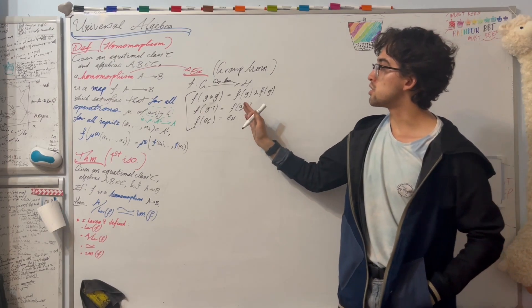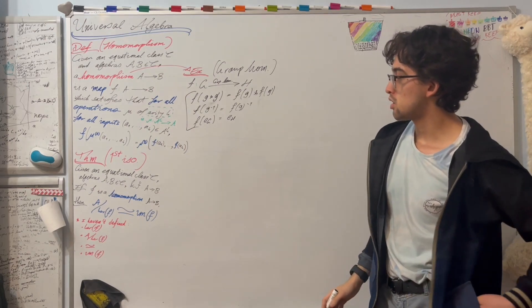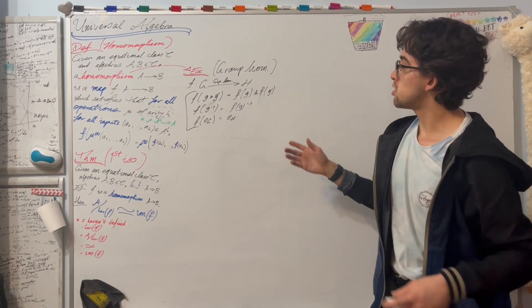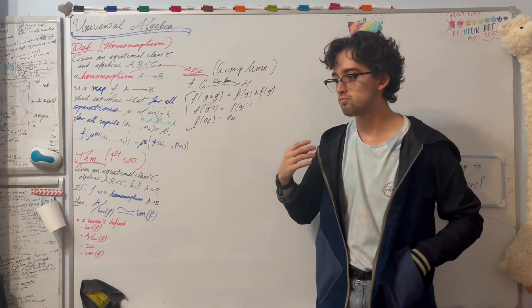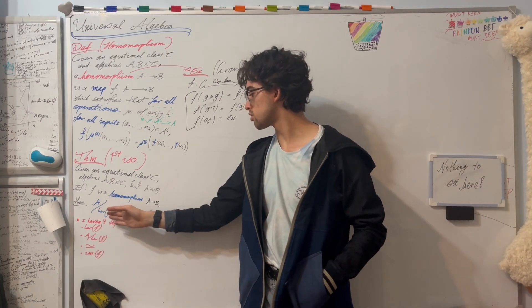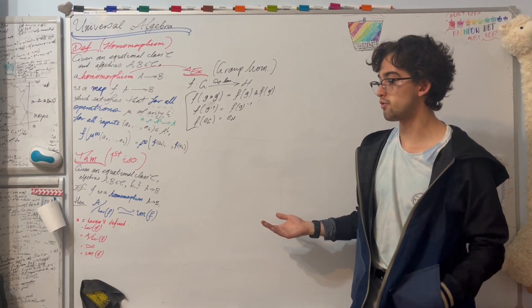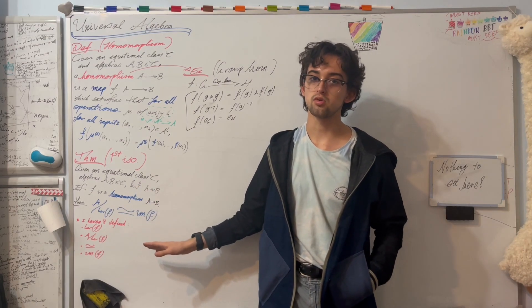Thus f is a homomorphism in the universal algebra sense. So to give you a real sense of why this is important, now that we know about group homomorphisms, we can of course extend most of our definitions to talk about objects like kernels, isomorphisms, and images. And we of course recover the first isomorphism theorem, that domain mod kernel is always isomorphic to image.